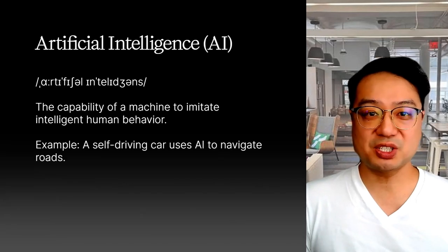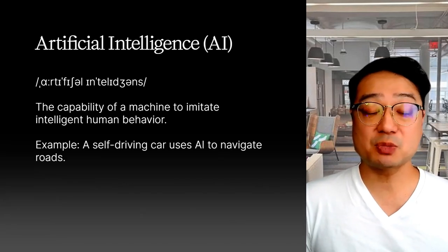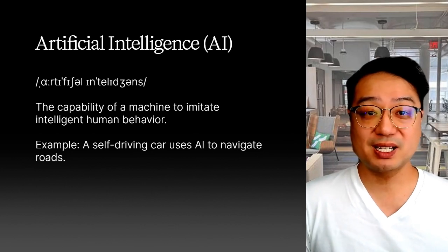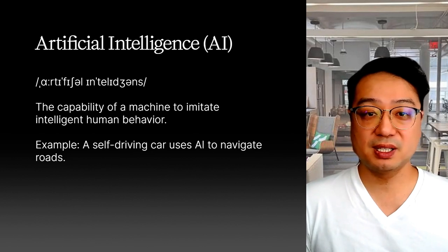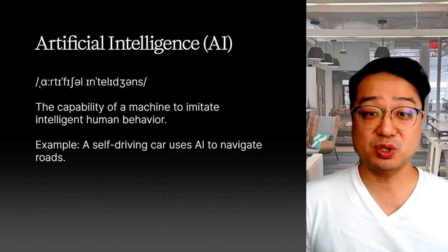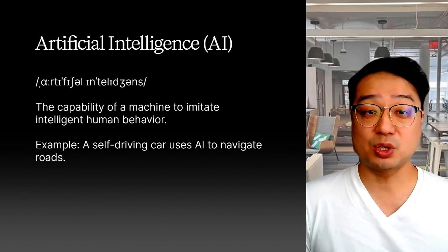First up, artificial intelligence. Simply put, it's when we make computers smart enough to do things that usually need humans — like thinking, learning, and problem solving. Think of it like this: AI is like teaching your dog new tricks. You're giving it the ability to do something it couldn't do before.